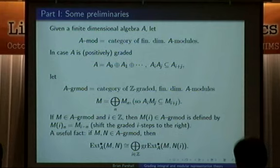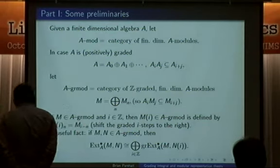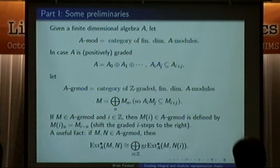If I have a finite-dimensional algebra A, then we'll work with a category of finite-dimensional A modules. Often A will be graded, and for me that always means positively graded. A-grmod is the category of Z graded finite-dimensional A modules.